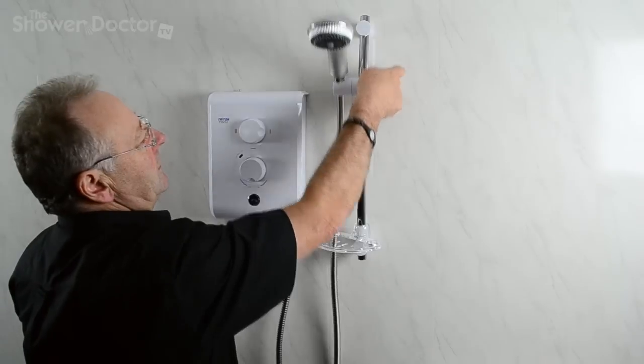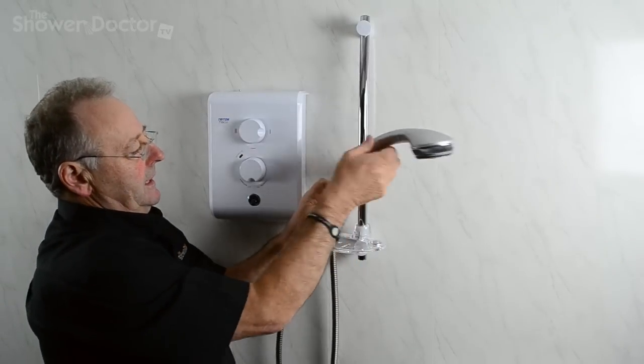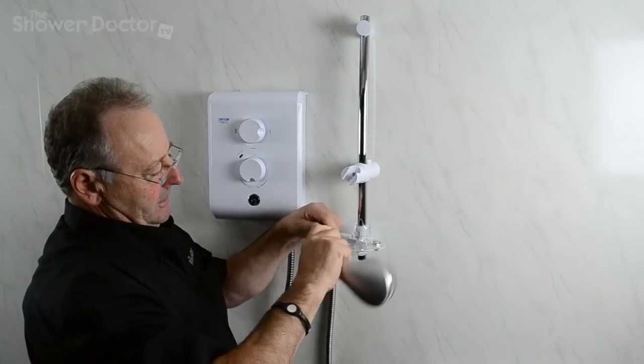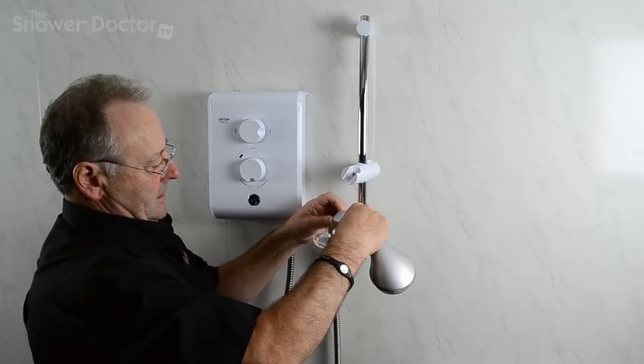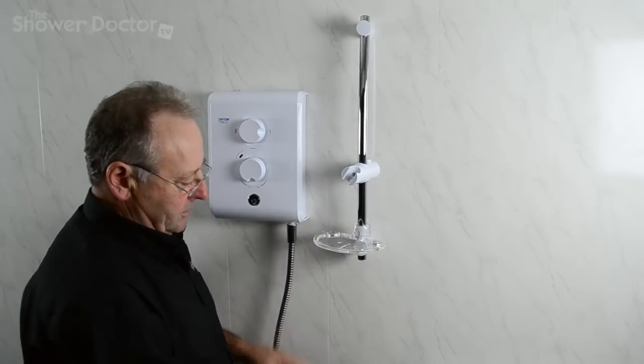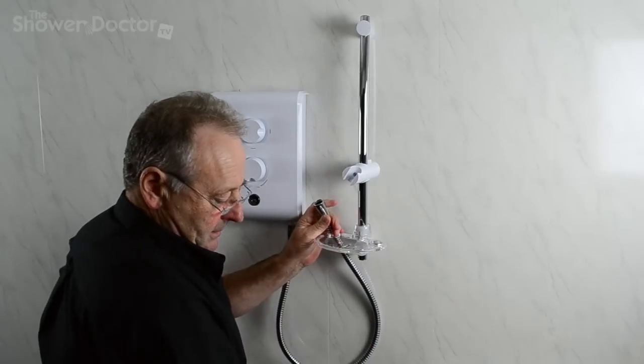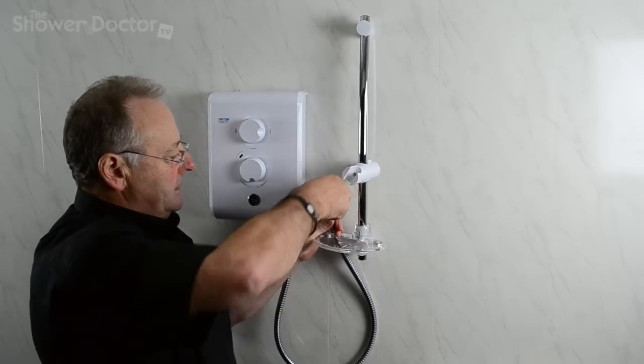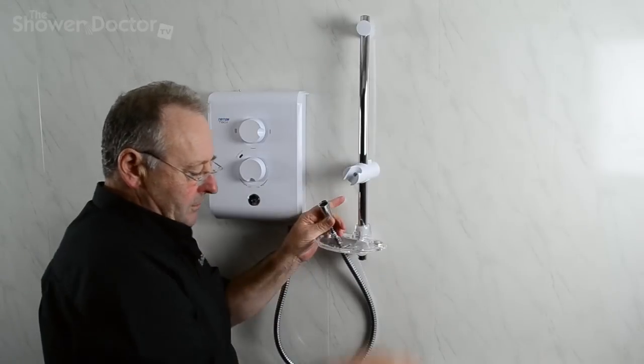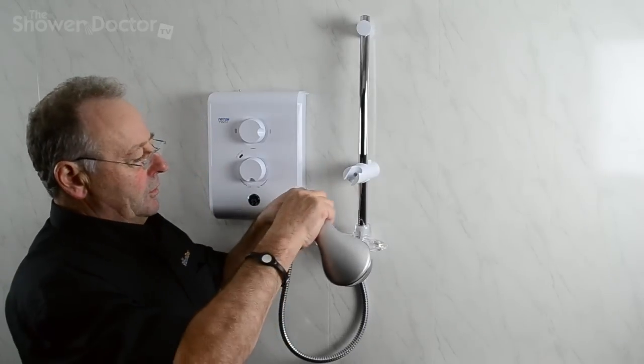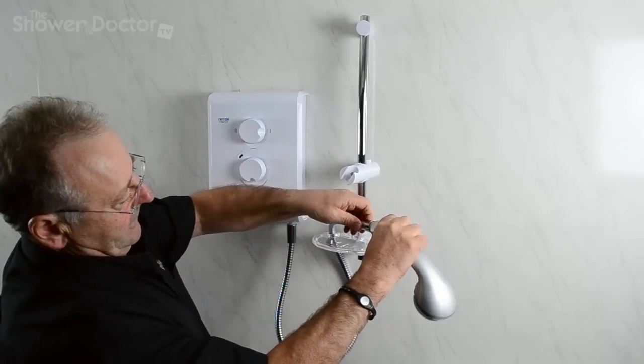Pop that one out, unscrew the hose, put the new hose into place and the washer. Press the washer home and screw the hose and the shower head back together.